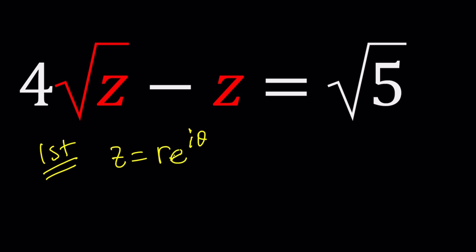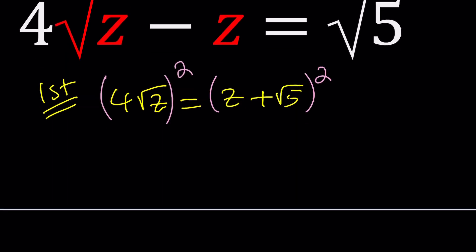Let's go ahead and isolate the radical and then square both sides. That way we'll get rid of the radical, right? This will become 16z, and this will become z².